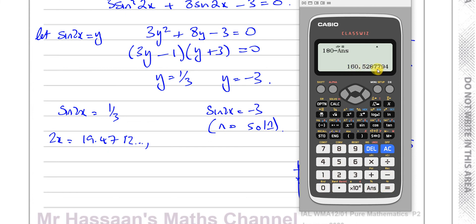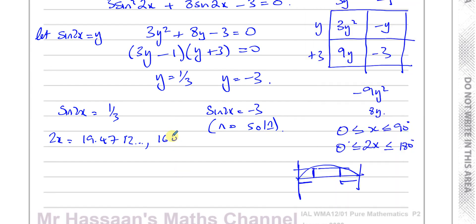So we're going to subtract this from 180. So I have 180 minus the answer, which gives me 160.528. So there's the answer for 2x, but we've got to find the value of x.